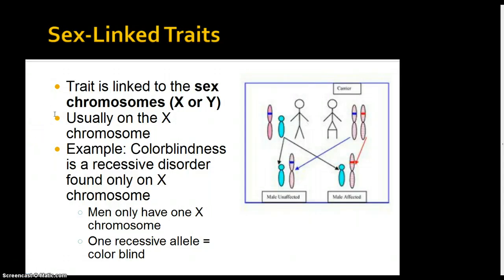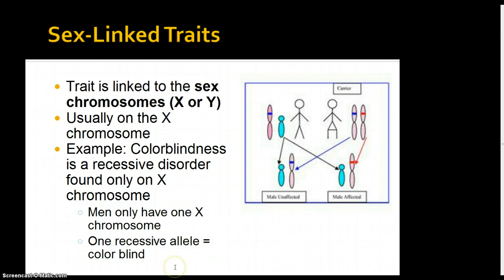The next type is sex-linked traits — traits linked to the sex chromosomes, either X or Y. Humans have 23 pairs of chromosomes: 22 autosomal and one pair of sex chromosomes (X and Y). Sex-linked traits are usually on the X chromosome, as the Y chromosome is very small and contains little genetic information — essentially it's just responsible for making males male. A great example is colorblindness, a recessive X-linked disorder. Males have one X and one Y chromosome, so if they receive a recessive X from their mother, they will be colorblind.